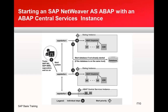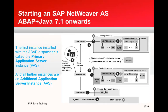This shows starting SAP NetWeaver AS ABAP with a central services instance: central services instance gets started first, then the central instance, and then the dialog instances. In 7.1 onwards, the terminology changes — there is nothing called central services instance or central instance; they are renamed to primary application server and additional application server instance. Take note because moving forward these are the names that will be used.